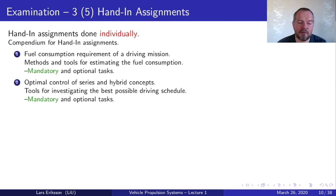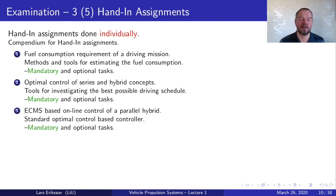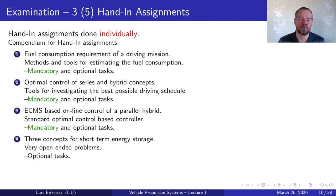The second hand-in assignment is about optimal control of series and parallel hybrid concepts. You will work with offline optimal control to get a grasp of the optimum energy consumption from a hybrid vehicle and insight into optimum control strategies. The next task is directed into online control using ECMS — equivalent consumption minimization strategy — for online energy management of vehicles. Then we have two optional tasks: one on short-term energy storage and the last one on fuel cell vehicles.